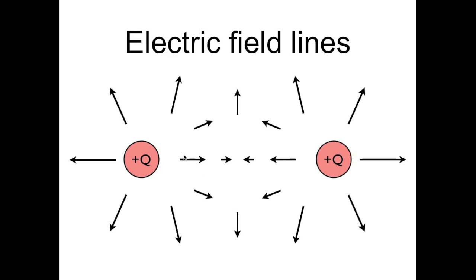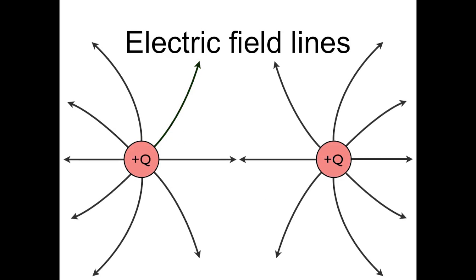Again, we can draw in the electric field at a specific point, here shown in green, and then look at the electric field at the end of this vector, and so on. Again, this is an approximation for the electric field line. And now here's the actual field line, and here are some more field lines.